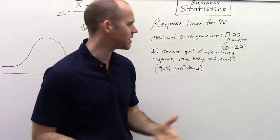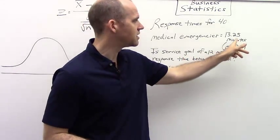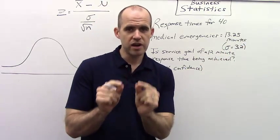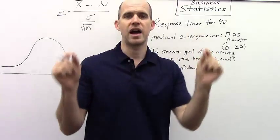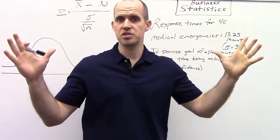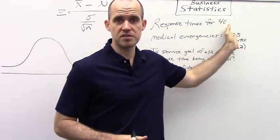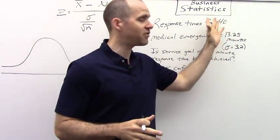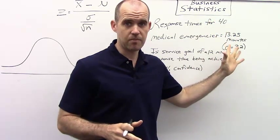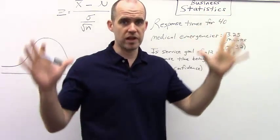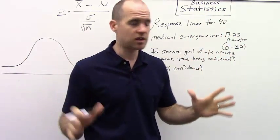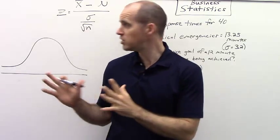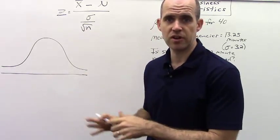Now, someone might say, well, no, you're not. You're at 13.25 minutes, and your goal is 12 minutes. But we're trying to make a statement about reality, about the greater population, not simply what we see in a sample. So a better way of saying it would be, do we have enough evidence in this sample to say that in reality, in the real population, we're not meeting our 12-minute goal? So we can use a hypothesis test to figure this out.